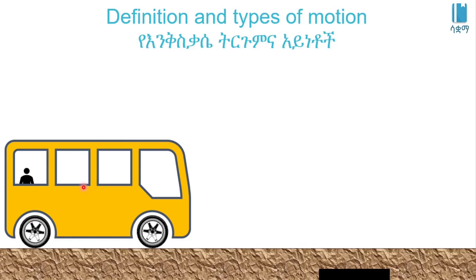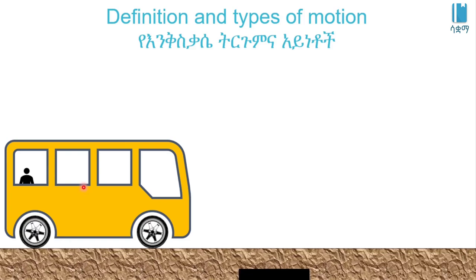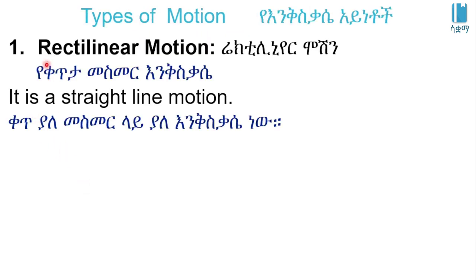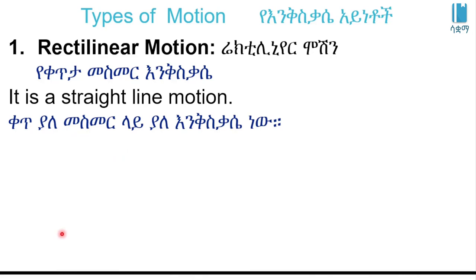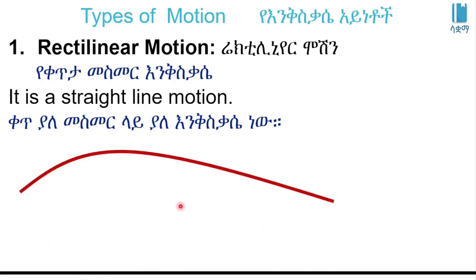Rectilinear motion is a straight line motion. If there are two squares, it is a straight line motion. Now if we see this sub-setting line-up, it will change the line-up.